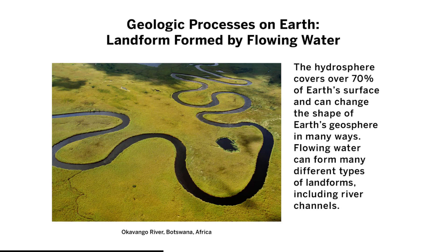Geologic Processes on Earth — Landforms formed by flowing water. The hydrosphere covers over 70% of the Earth's surface and can change the shape of Earth's geosphere in many ways. Flowing water can form many different types of landforms, including river channels. Notice that this landform was formed by flowing water. Examine the Geologic Processes cards posted to Classroom or in the Drive folder for this lesson.